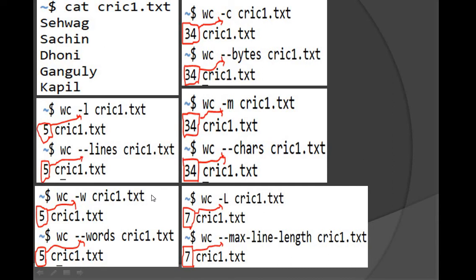Now we can see the number of words available in this file. After running wc -w, we can see five — it means this file has five words. We can also write this as wc --words crick1.txt and when we press Enter, we see the same result: the number of words followed by the file name.